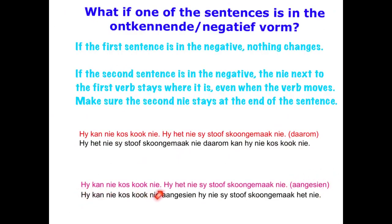For Groep 3, like aangesien — Hy kan nie kos kook nie. Hy het nie sy stoof skoon gemaak nie. Aangesien means 'seeing that' or 'as a result of seeing that'. So: Hy kan nie kos kook nie, because it is a result of the fact that he hasn't cleaned his stove. First sentence stays the same. Aangesien — no punctuation. Remember, we're going to move het all the way to the end of the sentence, so nie is going to be next to hy. Hy het nie sy stoof skoon gemaak nie — het is not a helping verb, so it goes after skoon gemaak, and nie must stay all the way at the end: Hy kan nie kos kook nie aangesien hy nie sy stoof skoon gemaak het nie.